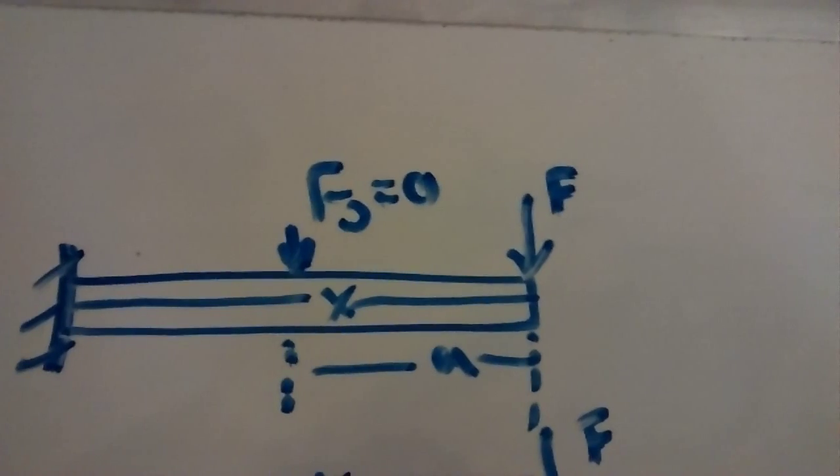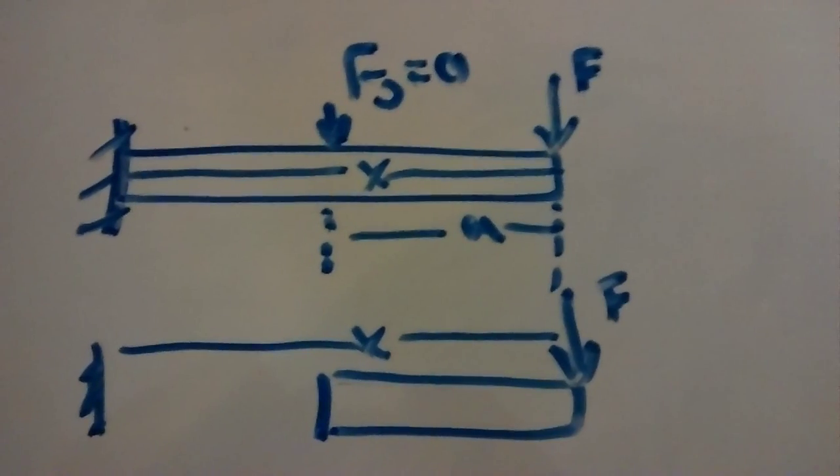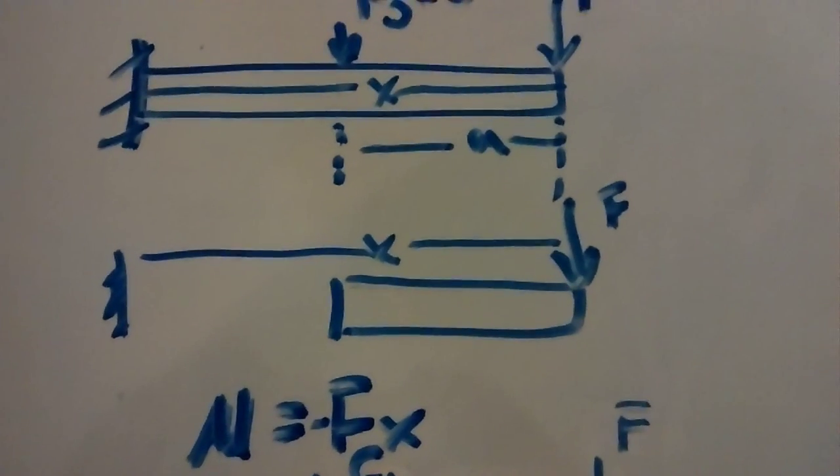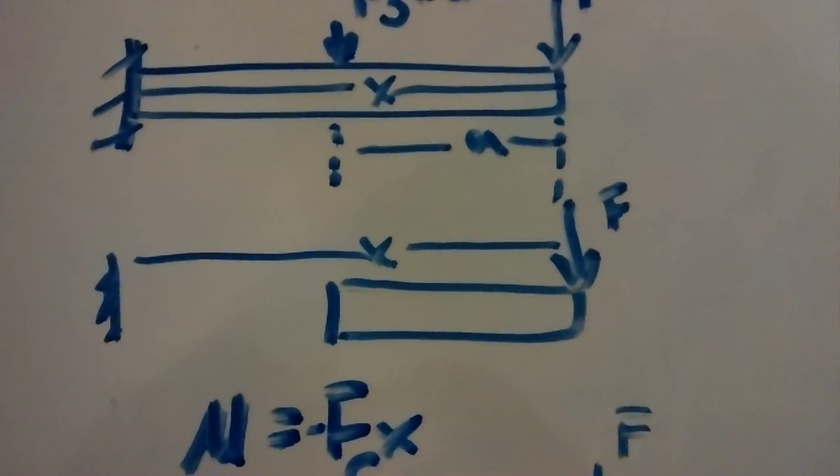So now let's go find our moment equation. Breaking this up, we have the F, which is x distance away. So our equation is going to be M equals to negative F times x, because the force is going down times our x, which is our distance.